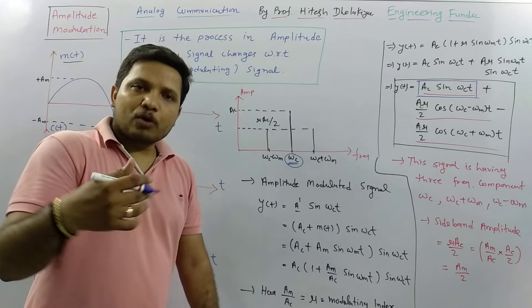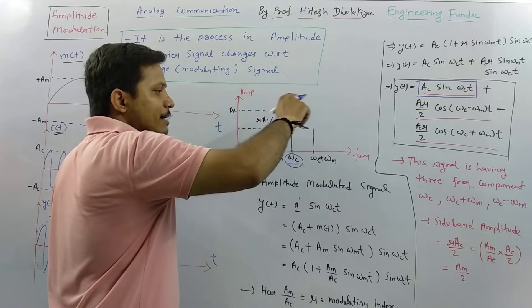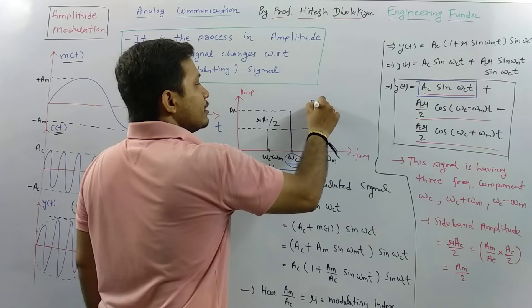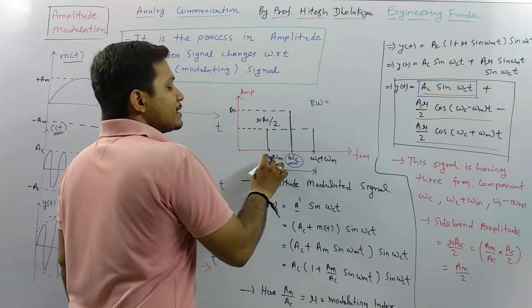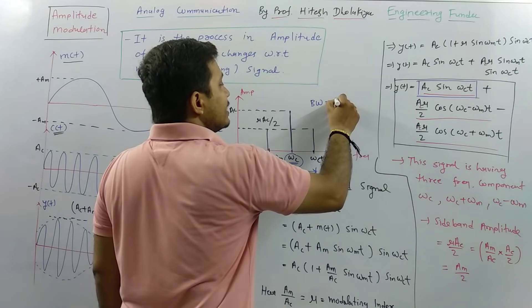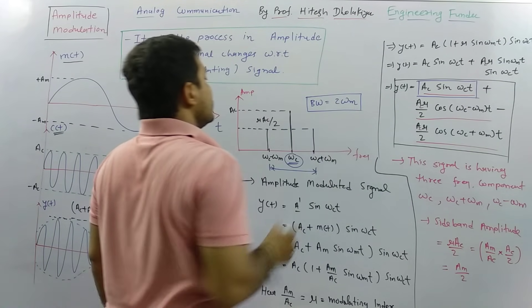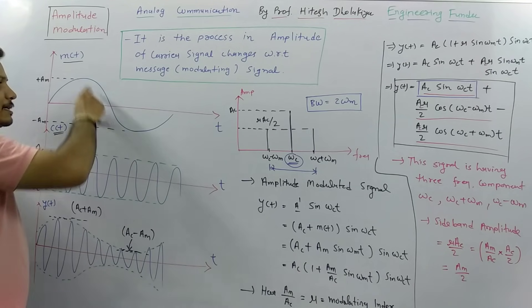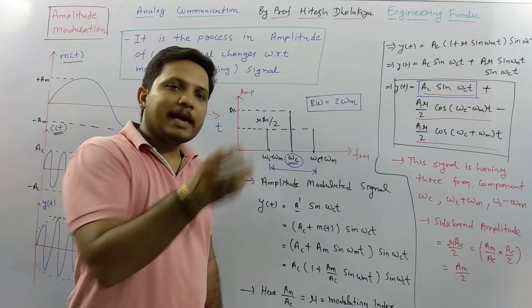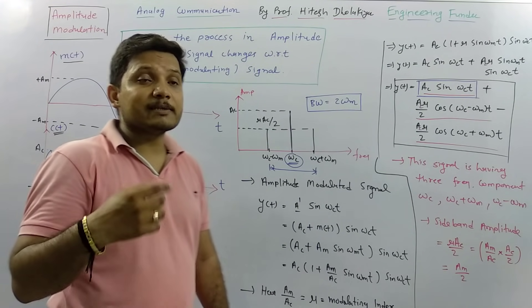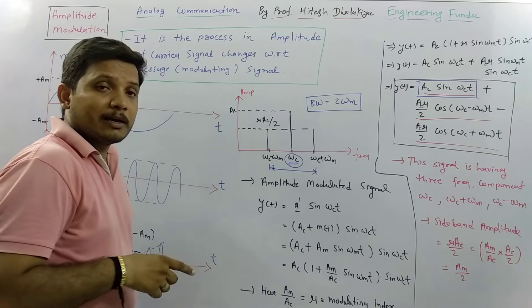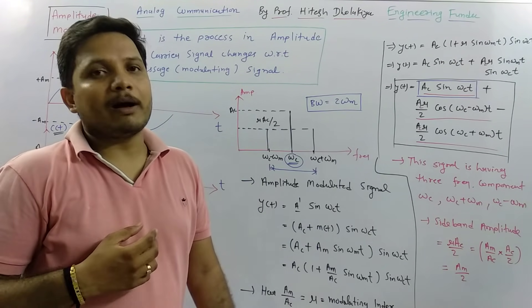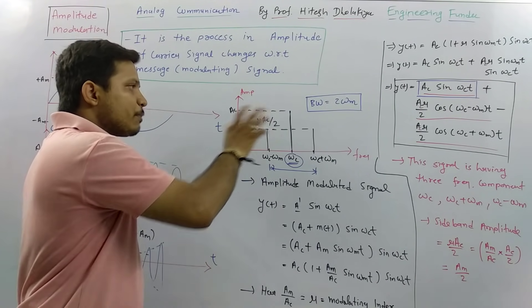Another drawback is the bandwidth of the AM signal. The bandwidth spans from ωC − ωM to ωC + ωM, which equals 2ωM. This bandwidth is double the bandwidth of the modulating signal. So the AM signal requires higher bandwidth as well as higher transmitted power — these are the basic problems with AM.